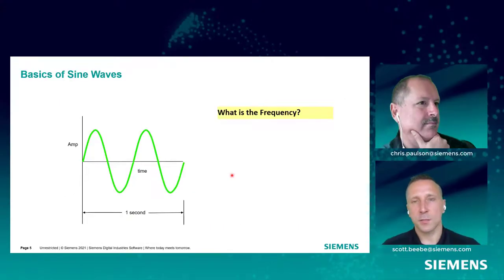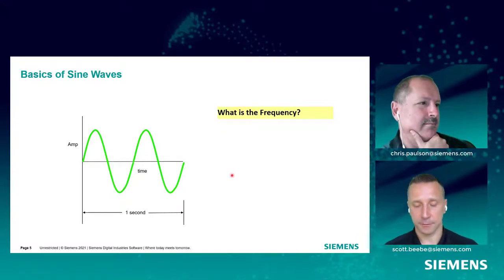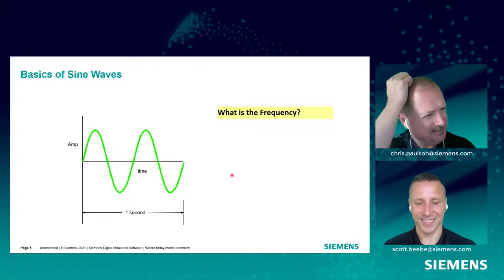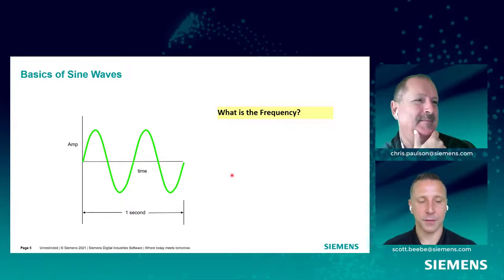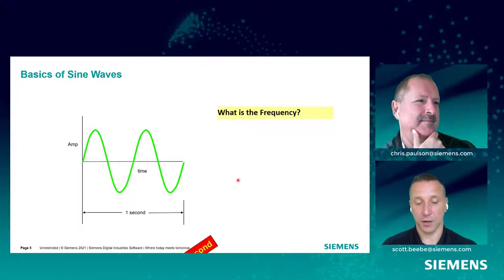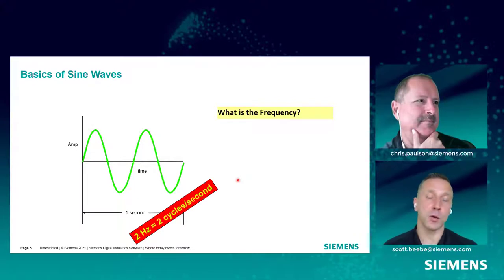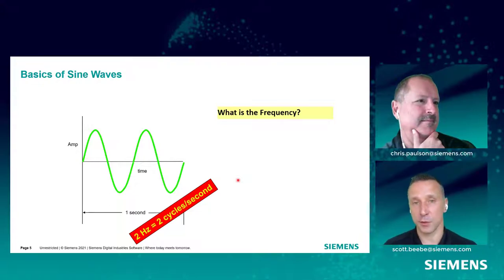Knowing that, let's look at some basics of sine waves. If we have this displayed sine wave, and I were to ask you what the frequency is, what would your answer be? It's 2 hertz, because this sine wave repeats itself twice within 1 second. Now we're going to be talking about orders, which happen in terms of cycles per rotation. So we could say that 2 hertz is also 2 cycles per second.